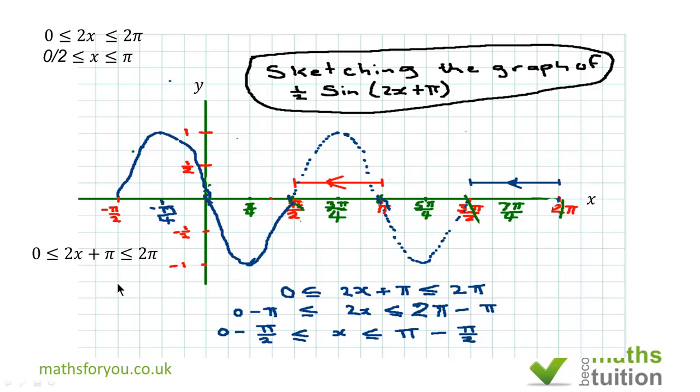Now for this one we are saying that 2x + π is going to be between 0 and 2π. But we want x. So if we subtract π from every term we end up with 2x being between -π and +π, because 2π - π gives us π. If we then divide every term by 2 we end up with x being between -π/2 and π/2. And that's all you have to remember.